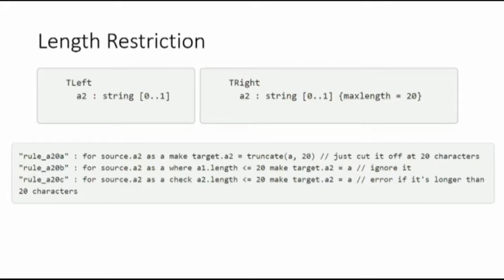Then we deal with more complicated cases — for example, what do we do if there's a length restriction on one side? You can say we're just going to truncate to 20 characters. Or you can say: if it's less than 20 characters, we'll handle it — putting a condition on your mapping clause using a FHIR path statement. Or you can say: check that the length is less than 20, and if it's not, fail with an error message. The mapping as a whole fails because we don't know how to proceed in that condition.